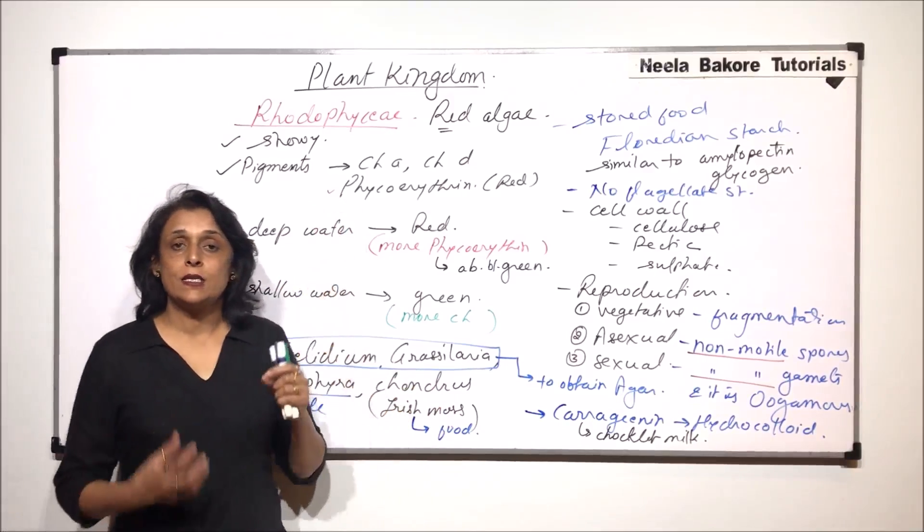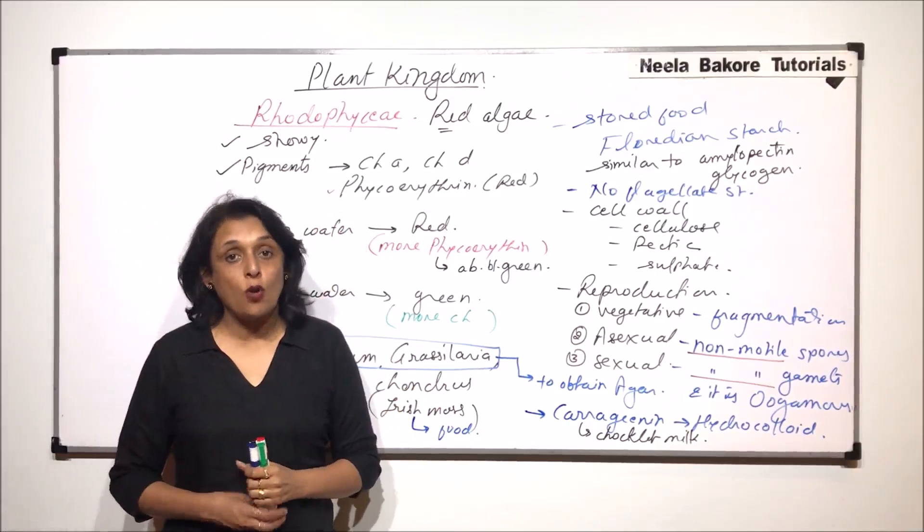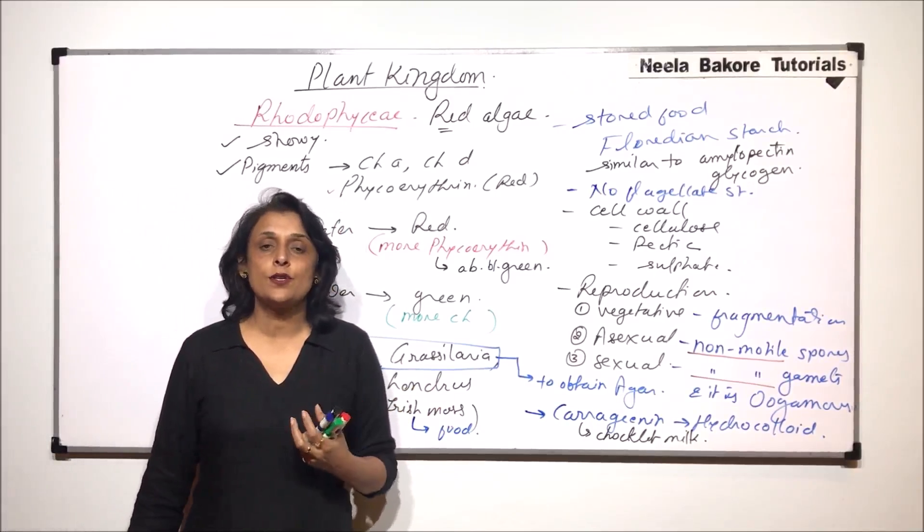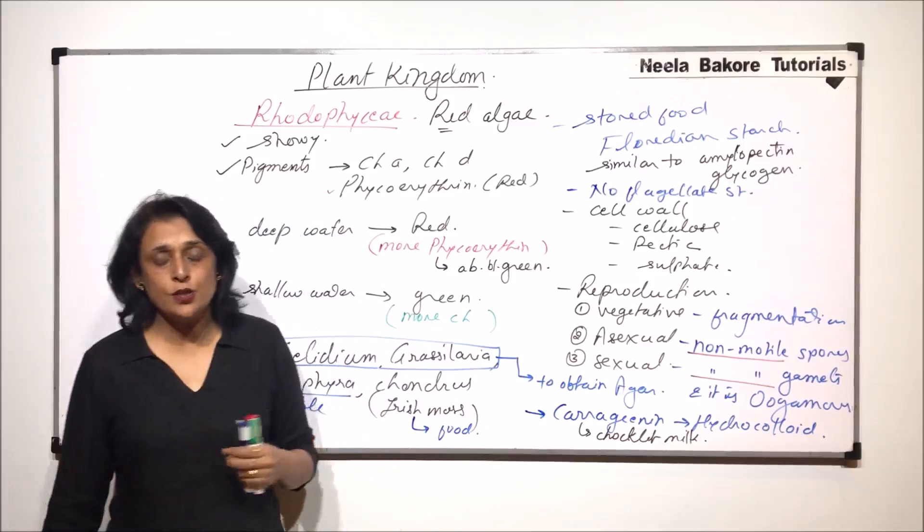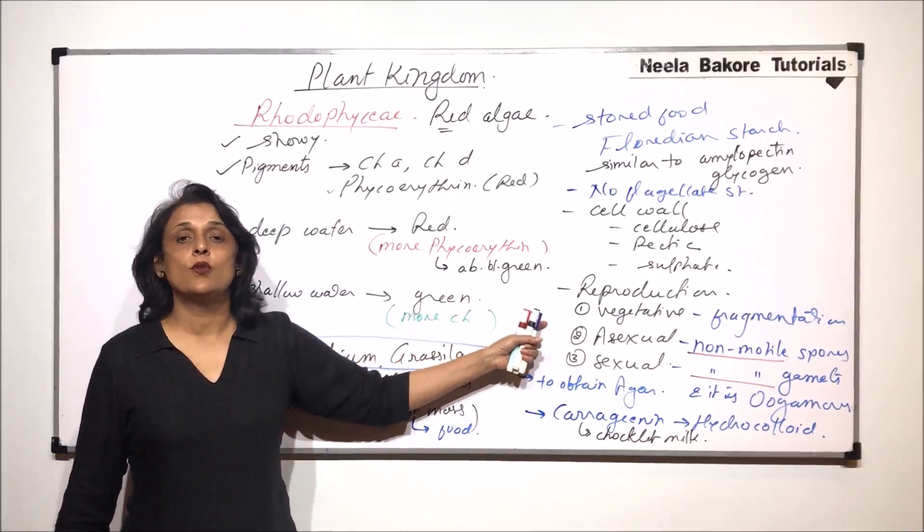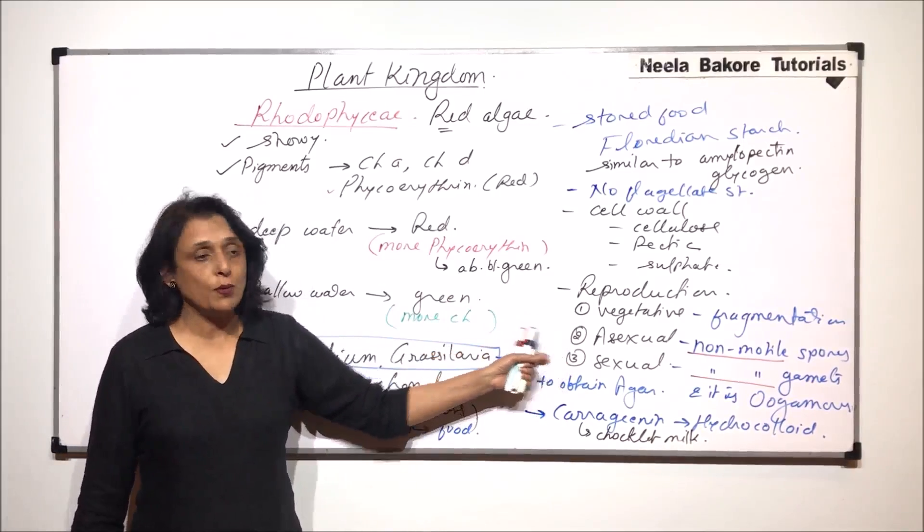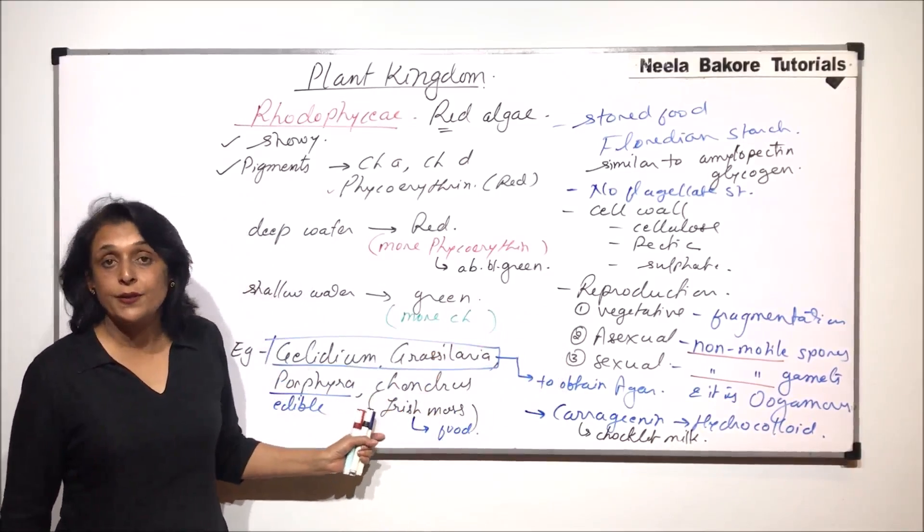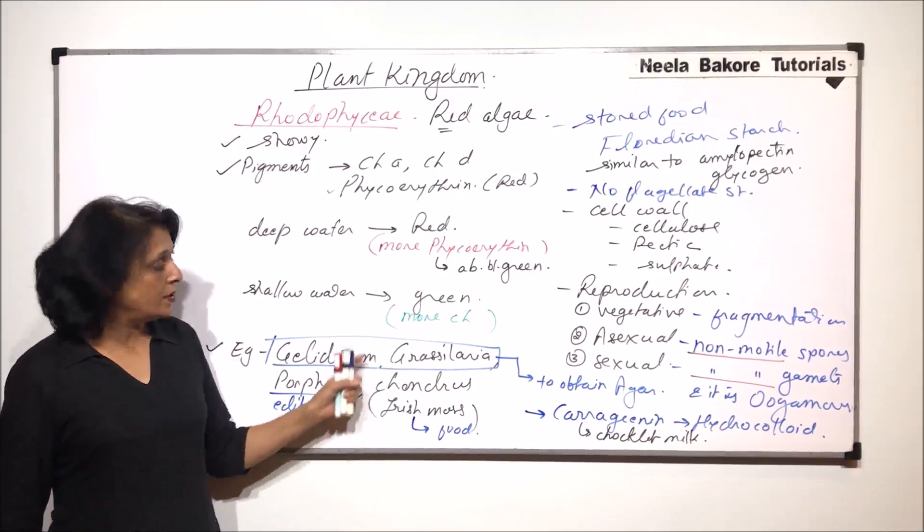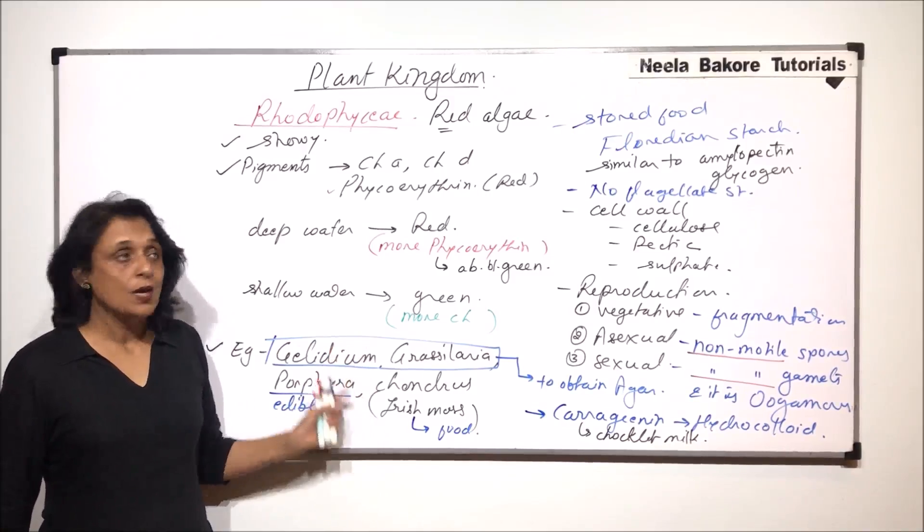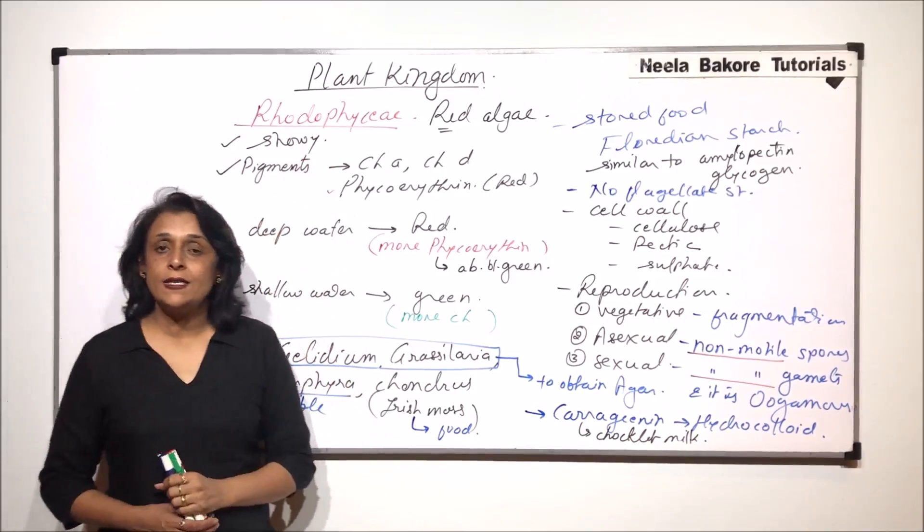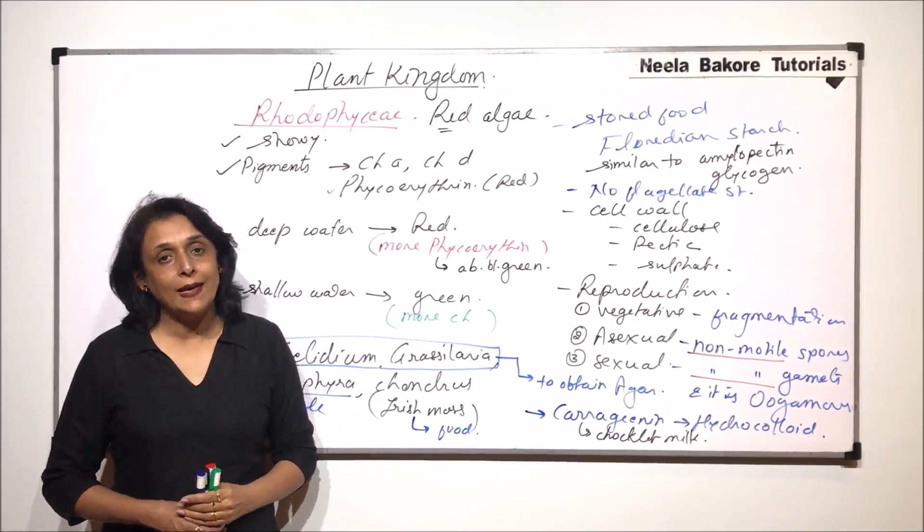So red algae, the structure, the body of the plant is complex but we do not have to discuss all those detailed structures because that is not in our syllabus. Only things those we have to remember are that there are three methods of reproduction and the most important is the economic importance and these examples. So this is about Rhodophyceae. In the next part we will take up brown algae.